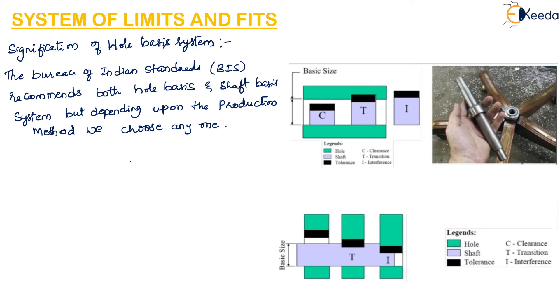This is the hole basis system where the size of the hole will remain constant. The hole is given with green coloration and the shaft is given here. You can see the size of the shaft is varying based on the type of fit required. For clearance fit, the shaft is a little bit small. For transition it is little bit big, for interference fit it is even larger.